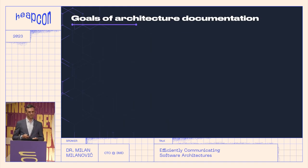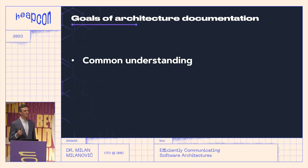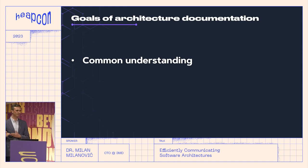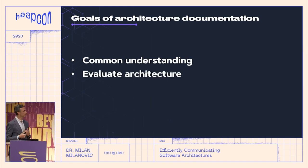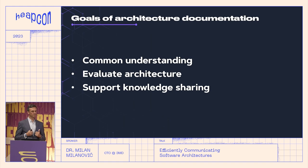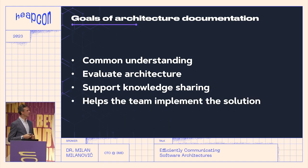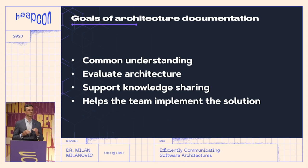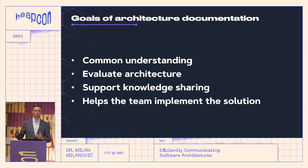The goals of our architecture documentation are to have common understanding — we want to bridge the gap between product and development. Then to evaluate our architecture: did our architecture meet the goals we had? Also to support knowledge sharing inside and outside our team. Then it helps to implement the solution, because before implementing we need to know some constraints and have some architectural decisions before we can go and implement.